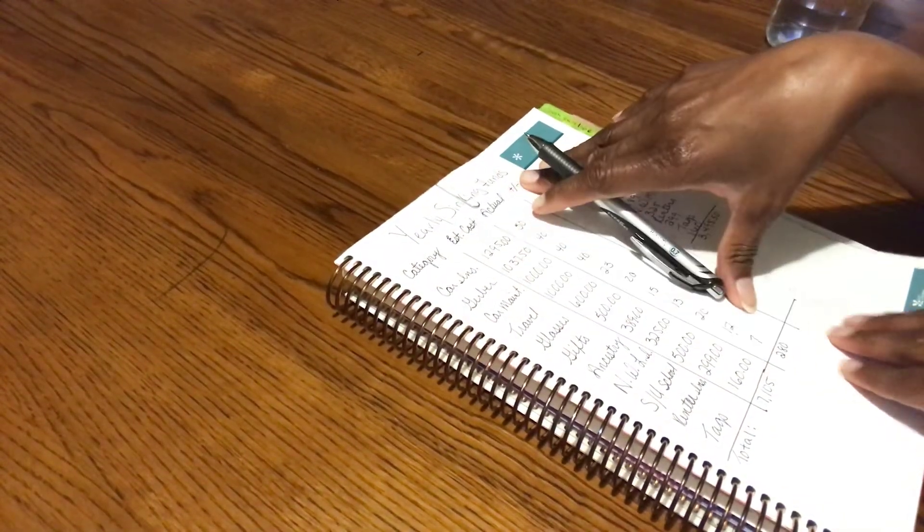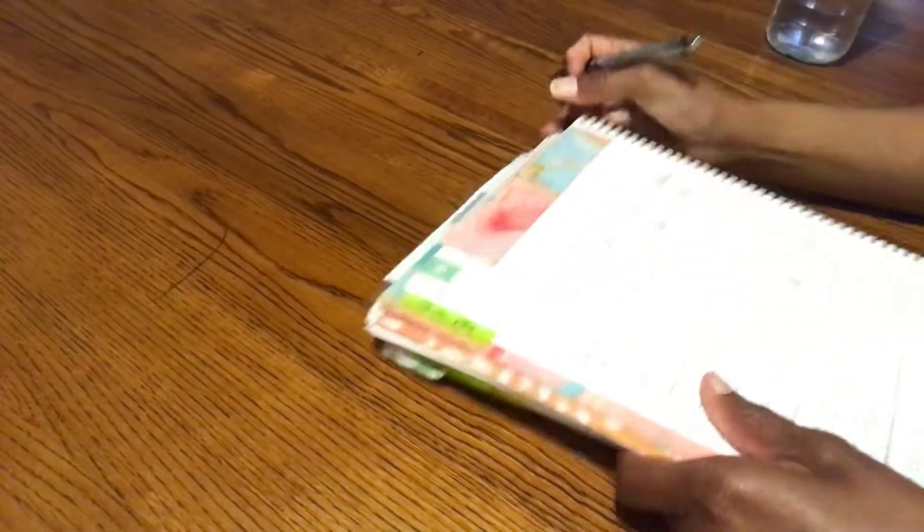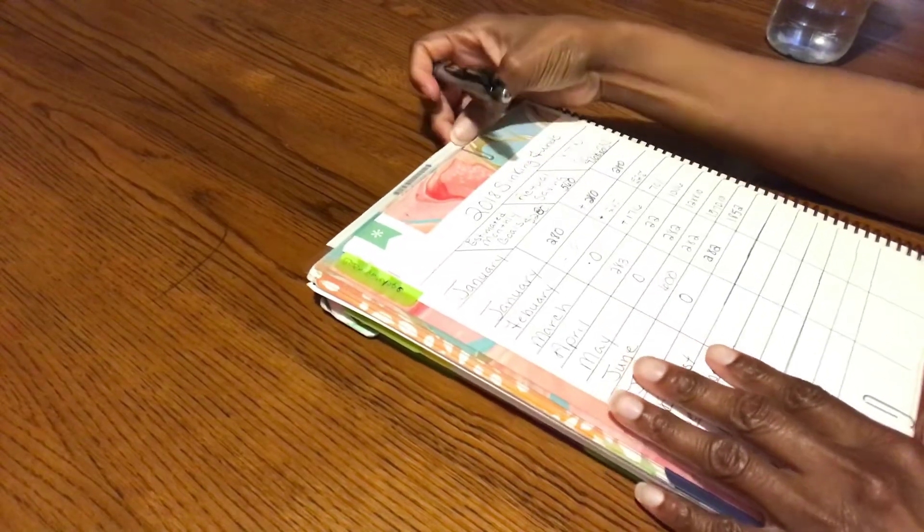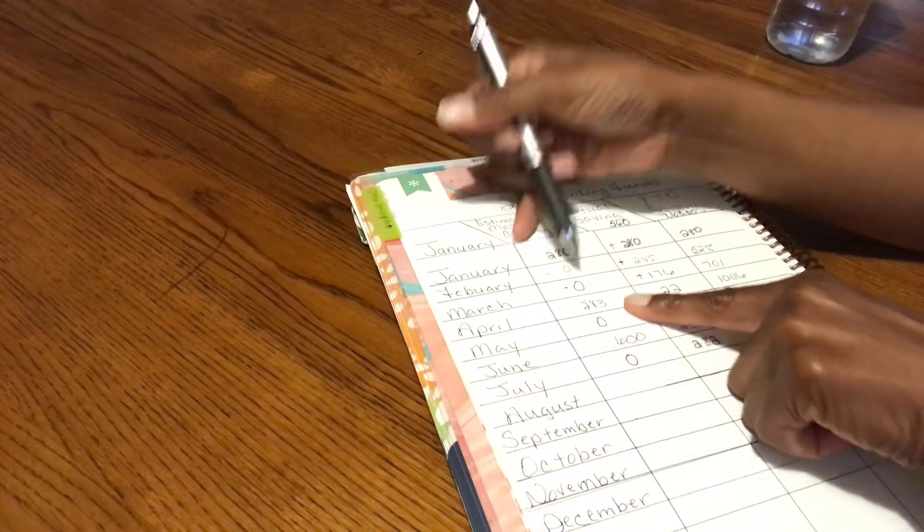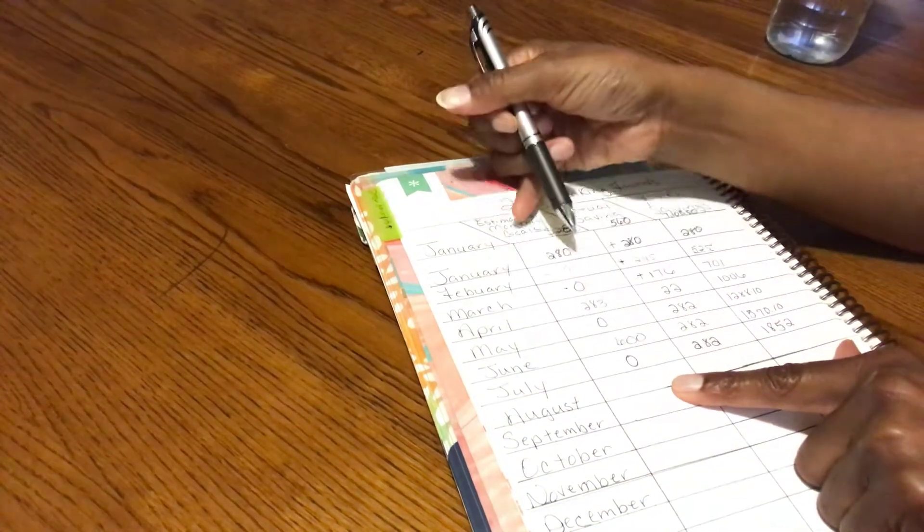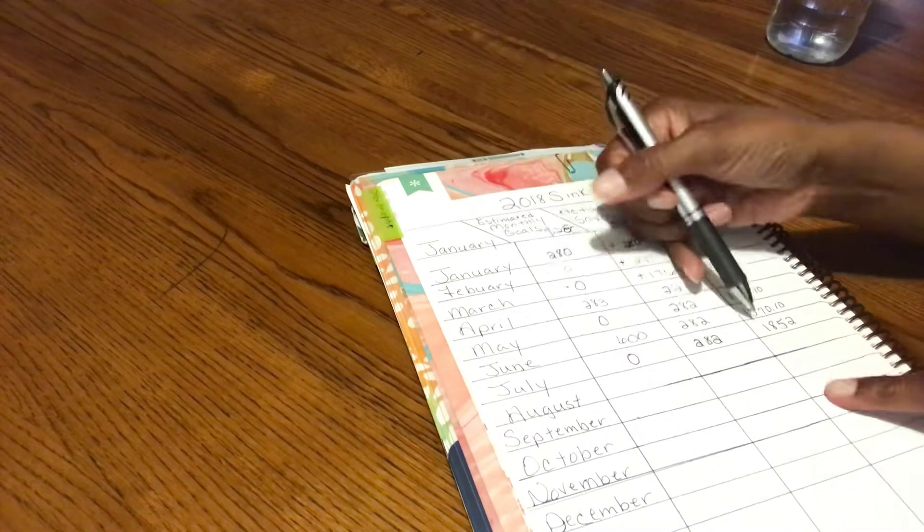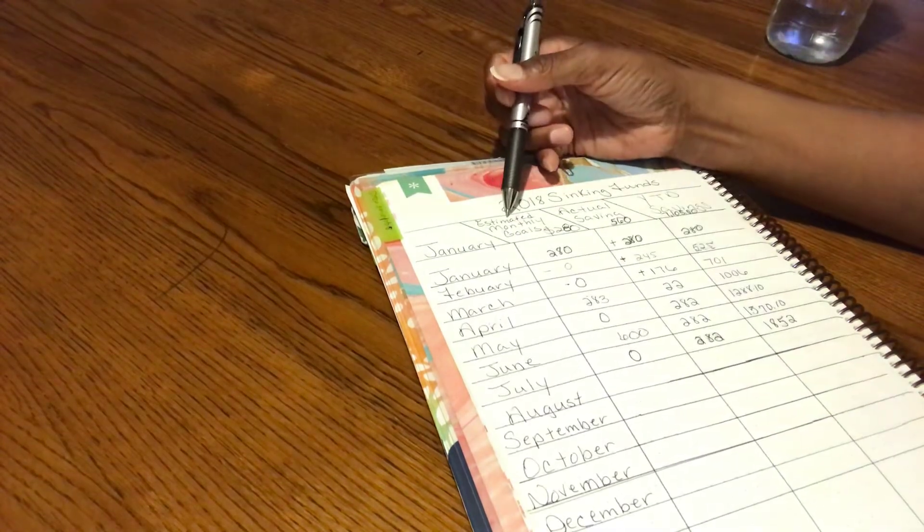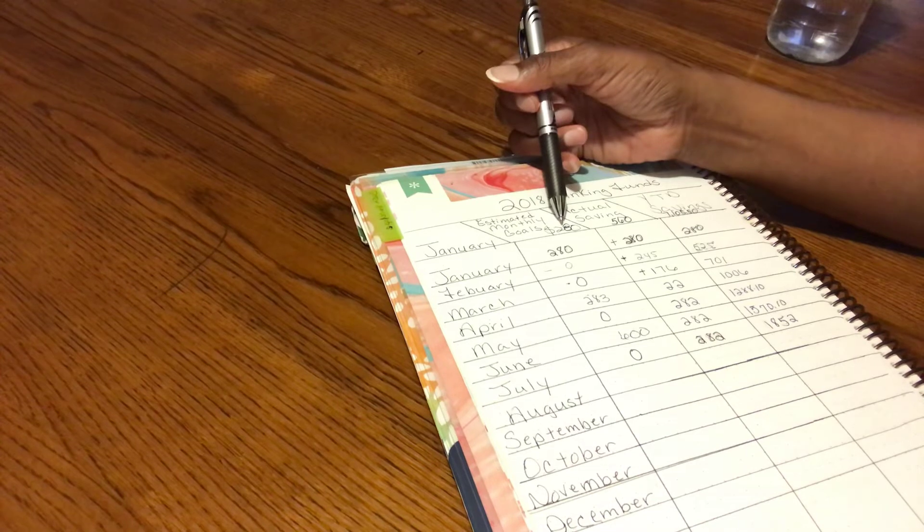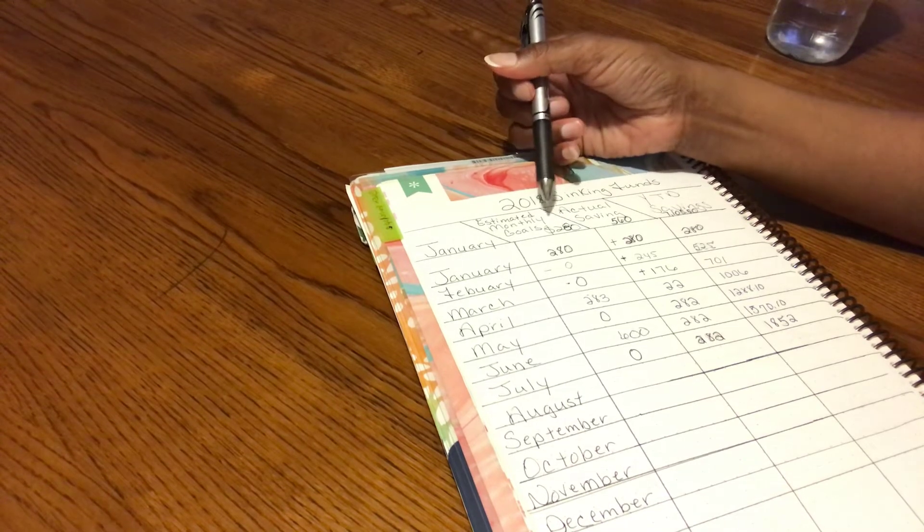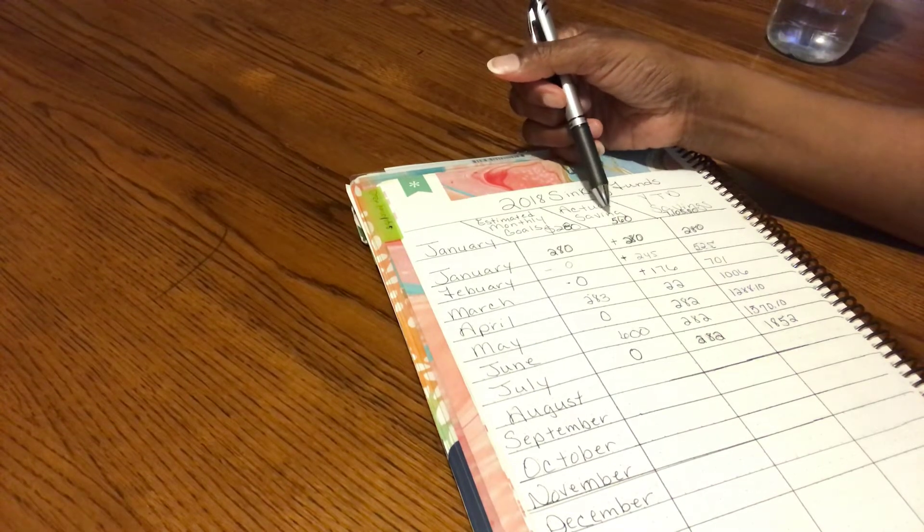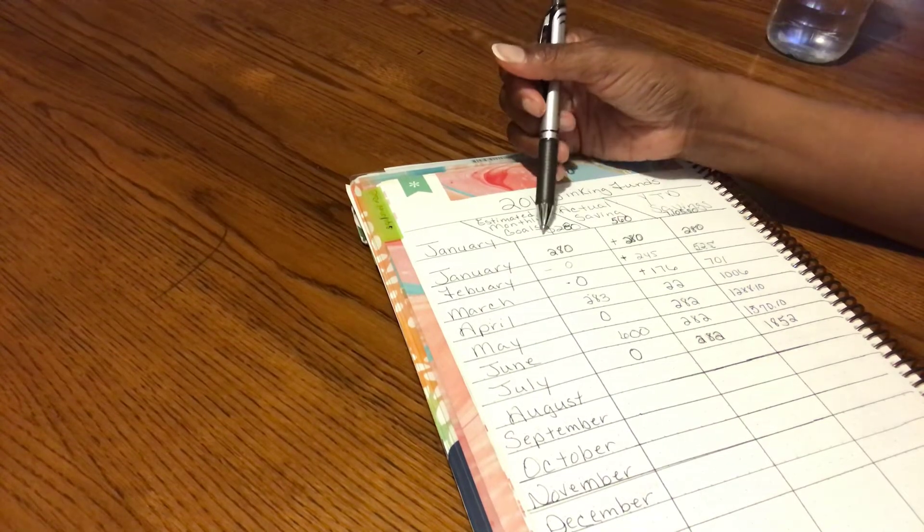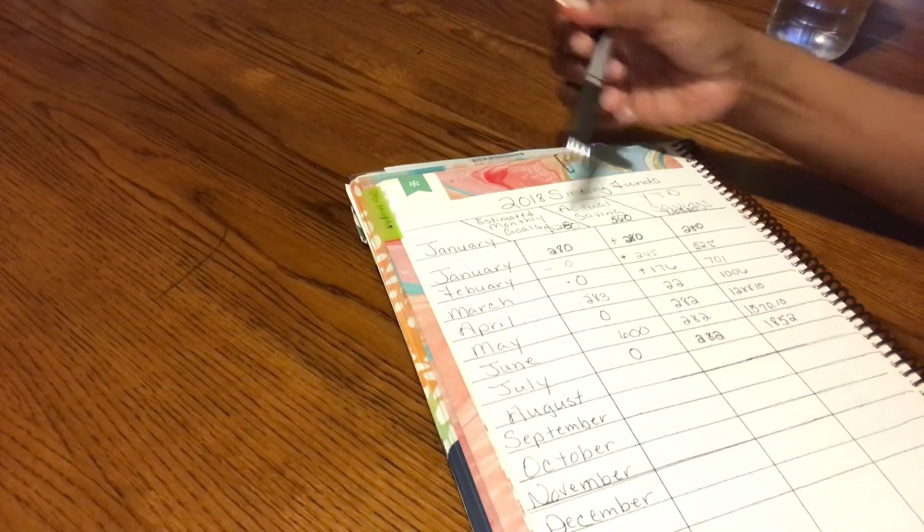After that, I made another page where I set this up so each month whatever I save, I'll plot it in here. We have our monthly estimated goal, which was $280 per pay period.